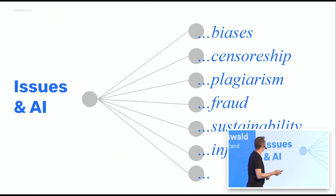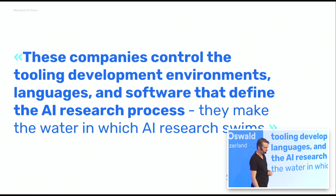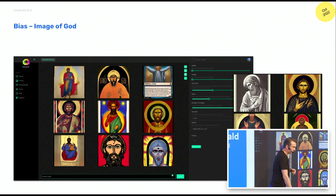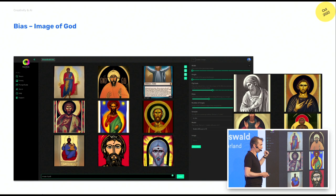Think and critique. We have biases, censorships, problems with plagiarism, fraud, and also issues with sustainability and injustice — just to hit a few. The problem is these companies owning those models control what we see and what we can do. There's bias coding and discrimination of people and colors in systems because the training data was bad. If you want to make a picture of God, you get a white, Christian-looking figure — which is not the real world.